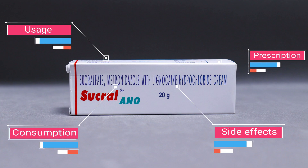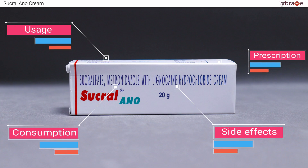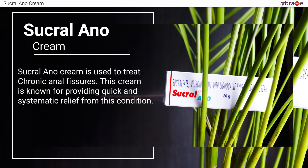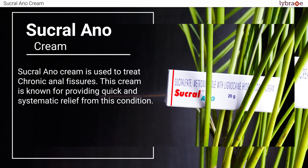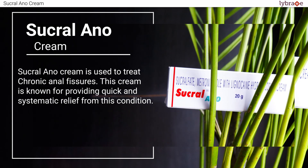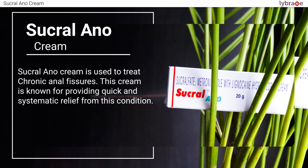We will be discussing elements like why it is used, to whom it is prescribed, its consumption and various side effects. Before starting with the theory, let me tell you a brief about this cream. Sucral ANO Cream is used to treat chronic anal fissures. This cream is known for providing quick and systematic relief from this condition.